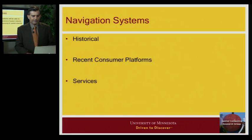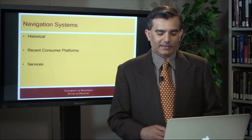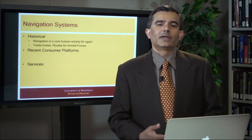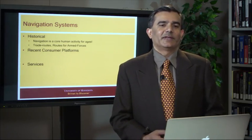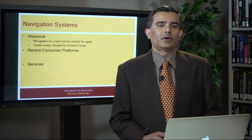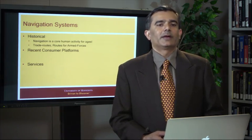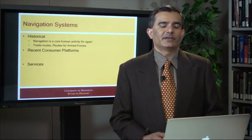Let's first look at spatial networks and where they come from. A very classical use case is navigation — finding routes to a particular destination. Navigation is really as old as humans. When humans had not settled down for agriculture, they still had to find food and water, and they had to remember routes, very much like how elephants and other migratory species do today.